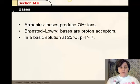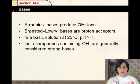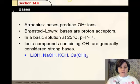A base, of course, is something whose pH is greater than 7, because it doesn't have much hydrogen ions. And ionic compounds containing OH negative are generally considered strong bases. For example, LiOH, NaOH, KOH, and Ca(OH)2.